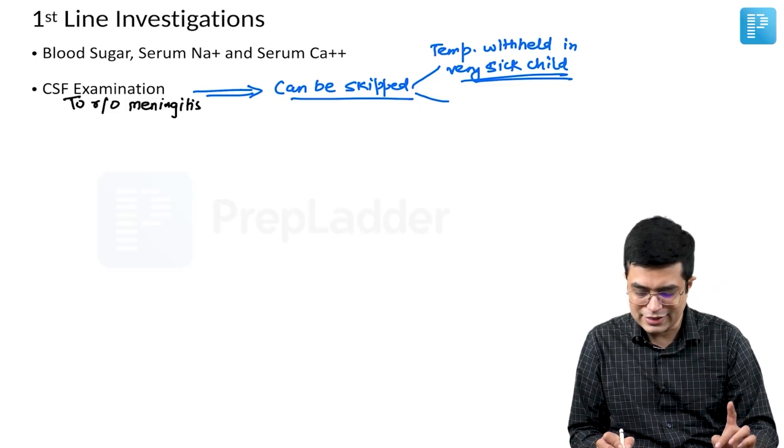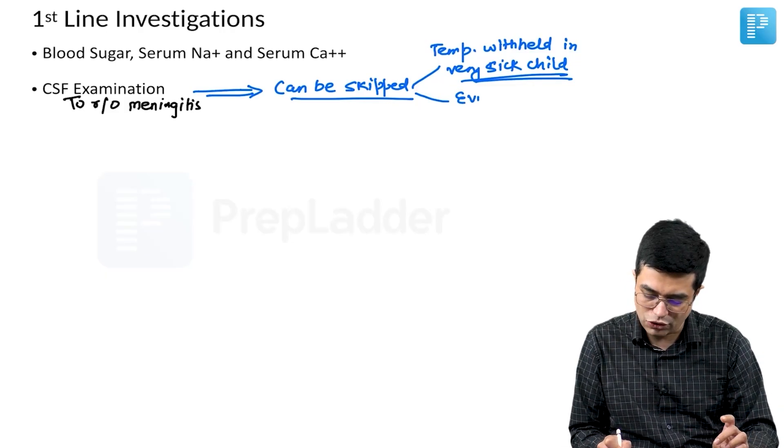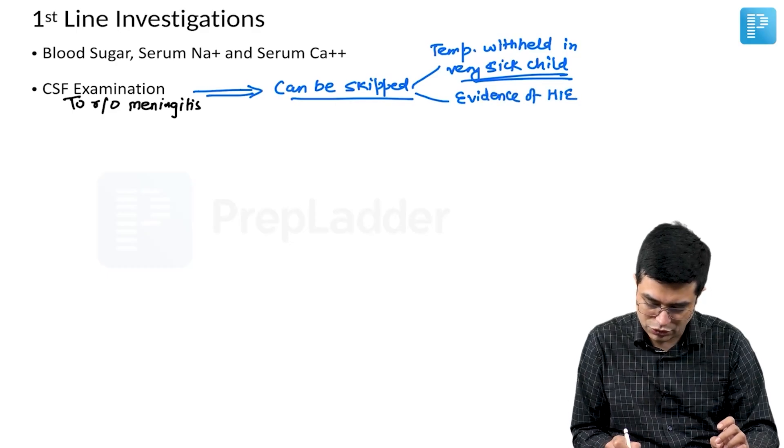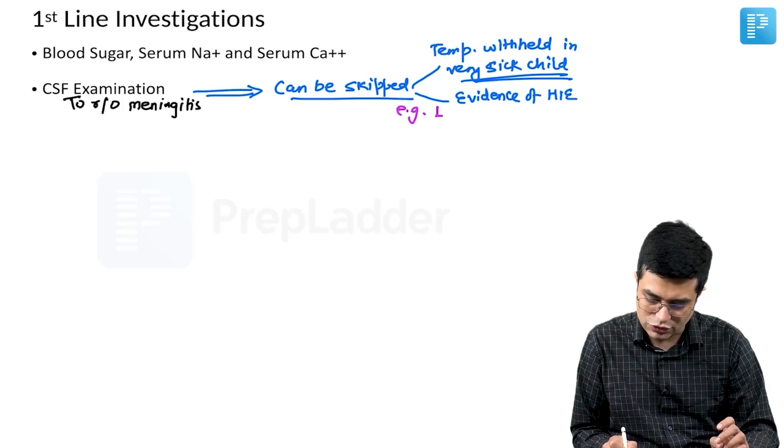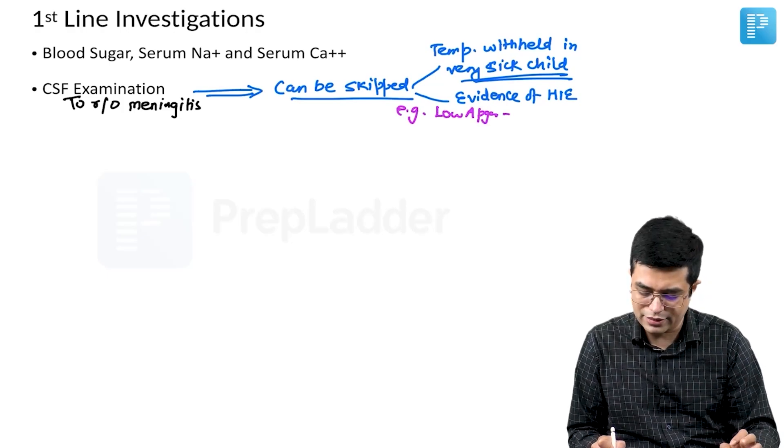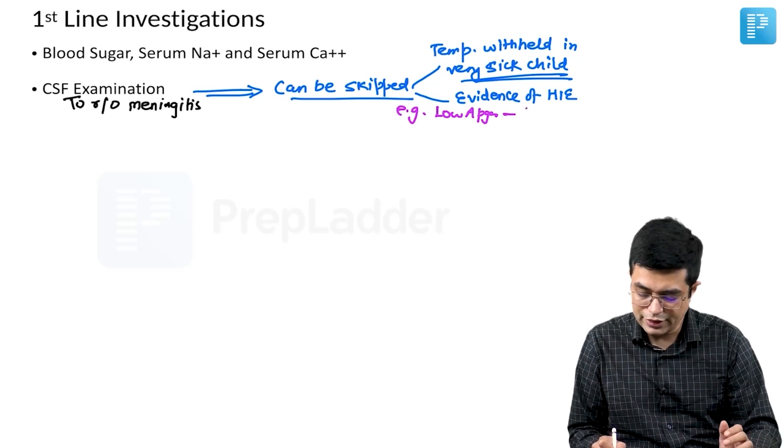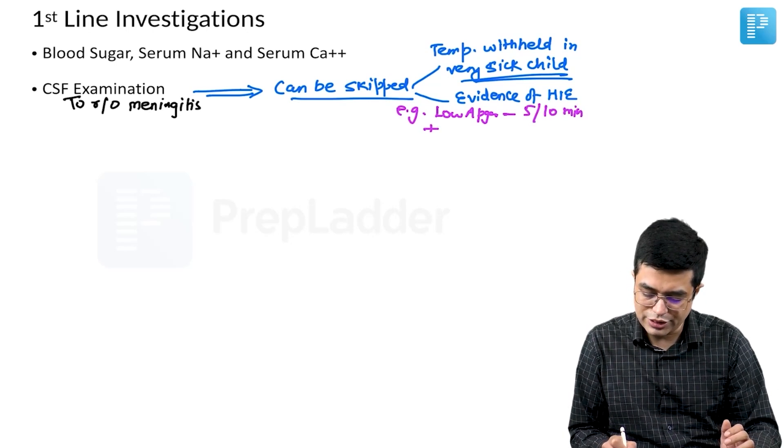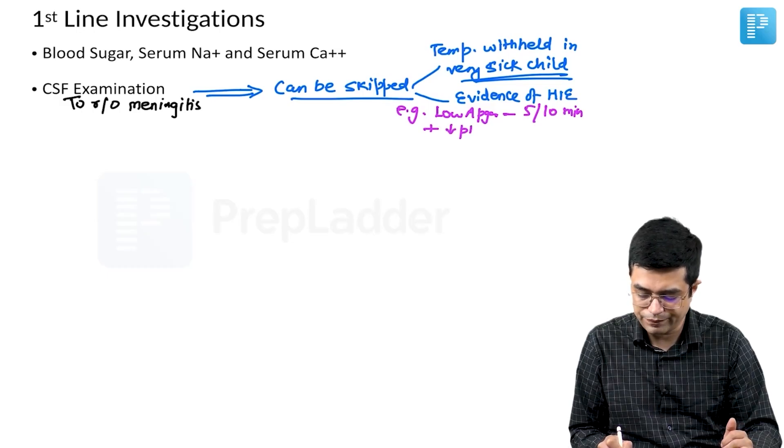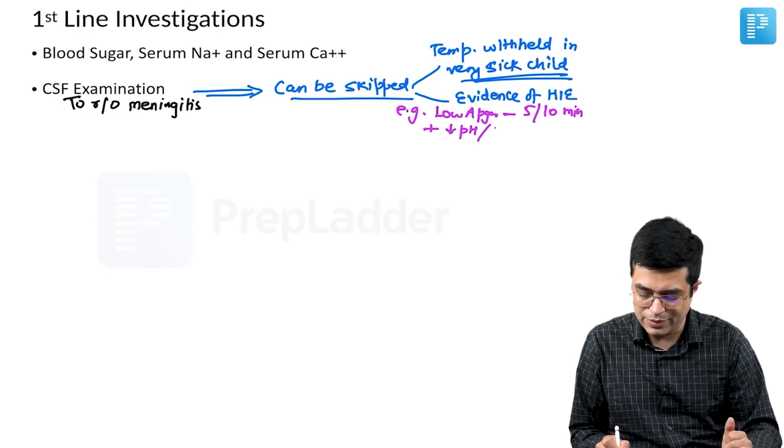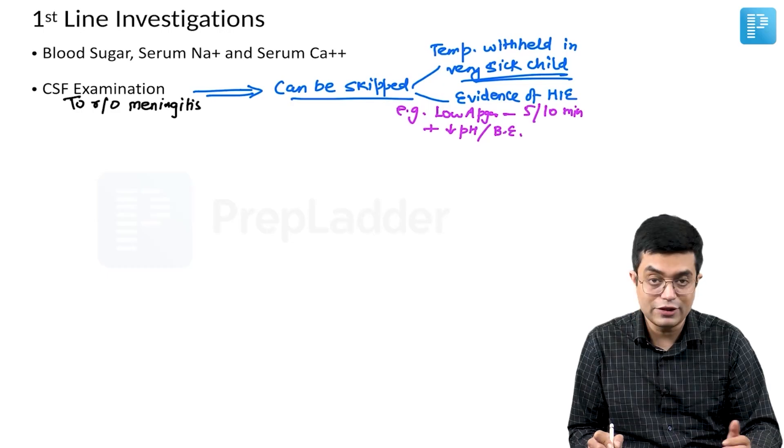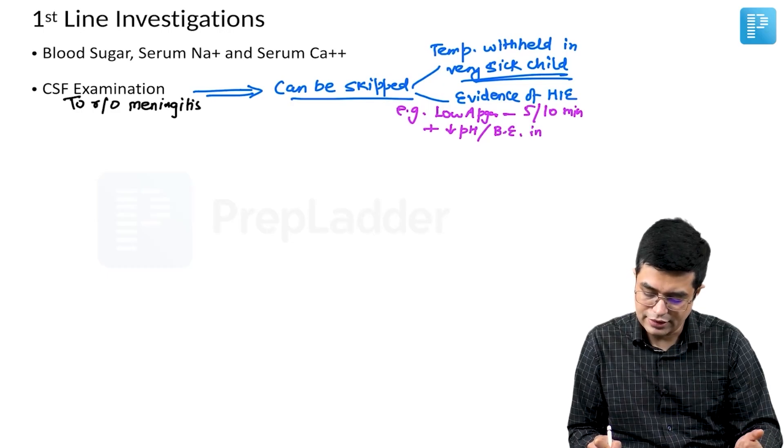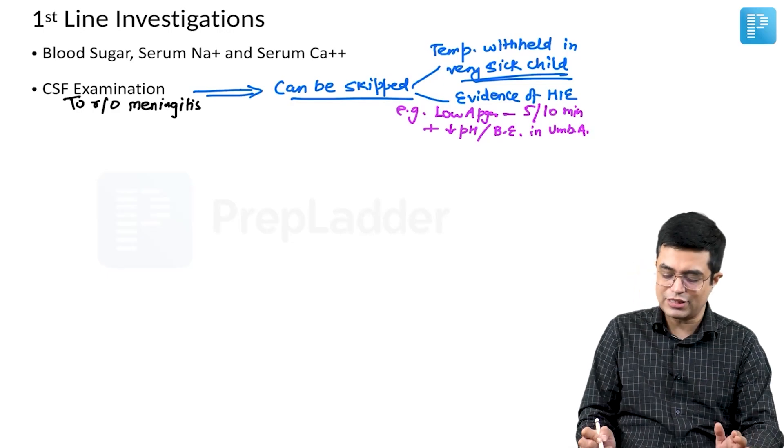But it can be permanently skipped in case there is evidence of HIE in the child. Like for example, there is a patient who is having a low APGAR score. One minute score is not that important, although we do take it. But a child having a low APGAR score at 5 or 10 minutes associated with evidence of low pH or base excess, increased base deficit in the umbilical artery.